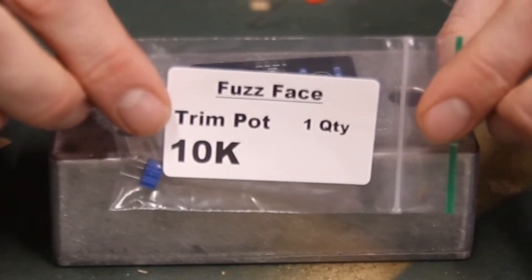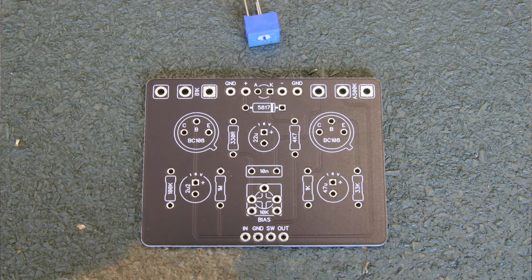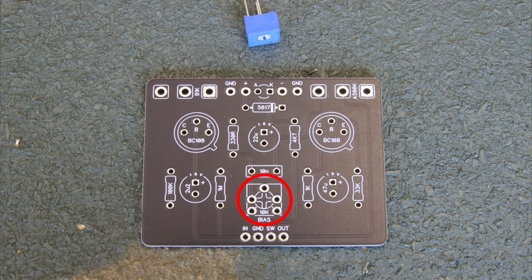Next find the 10k trim pot. It will get soldered into this circled part of the board labeled bias.